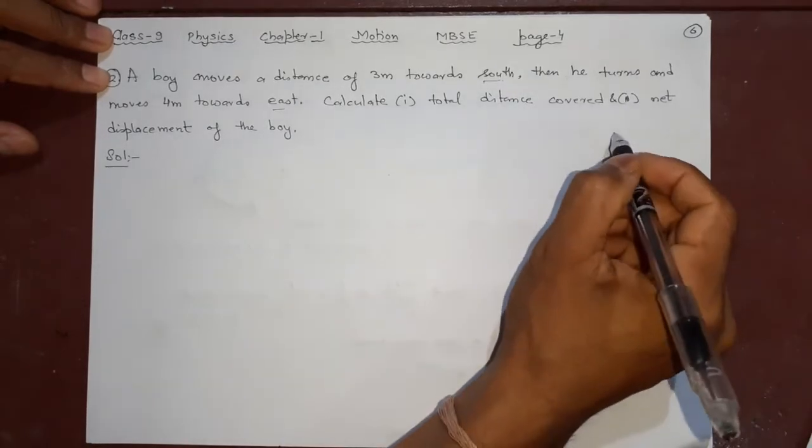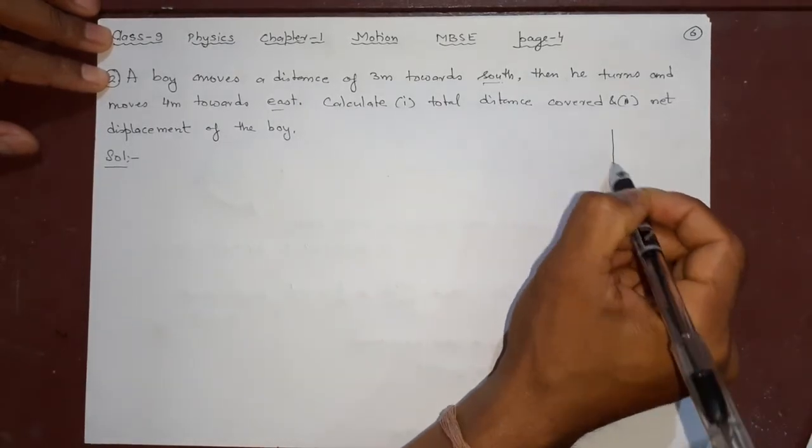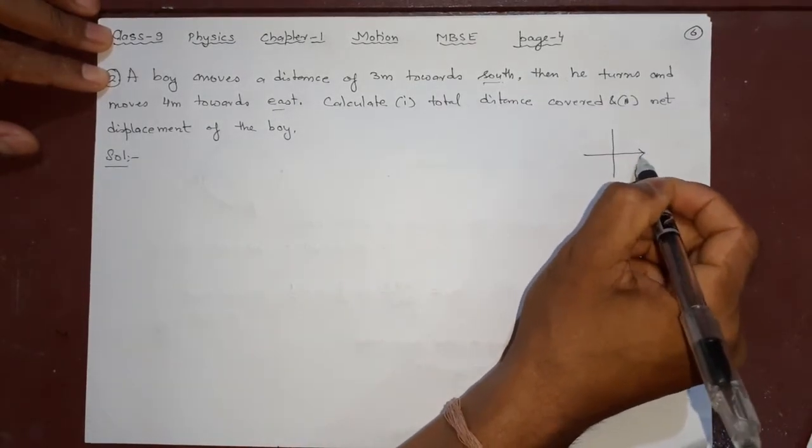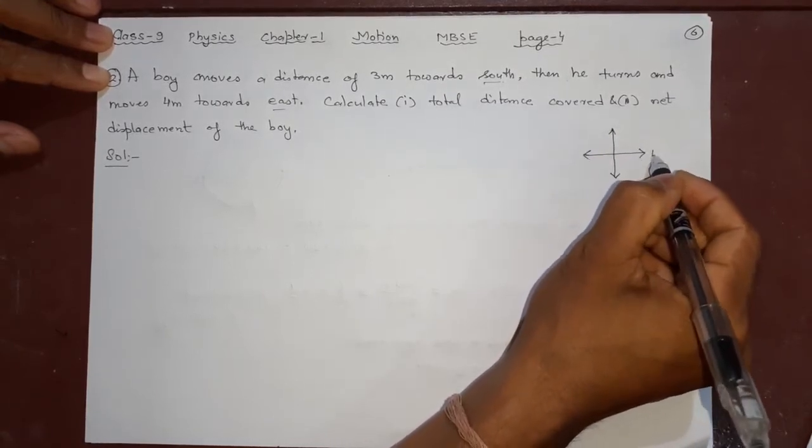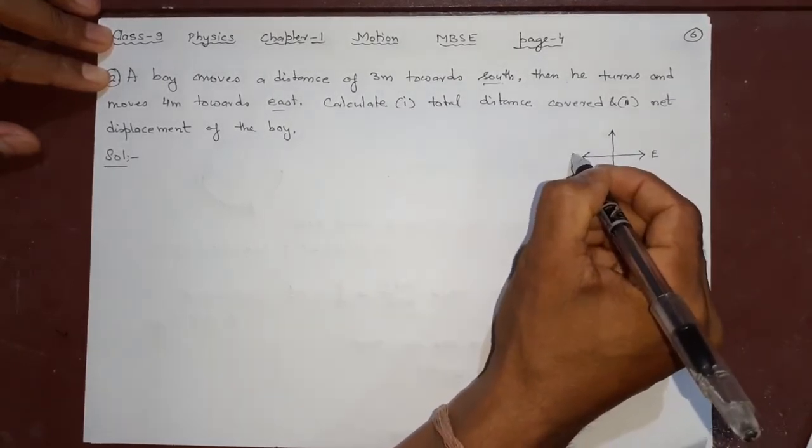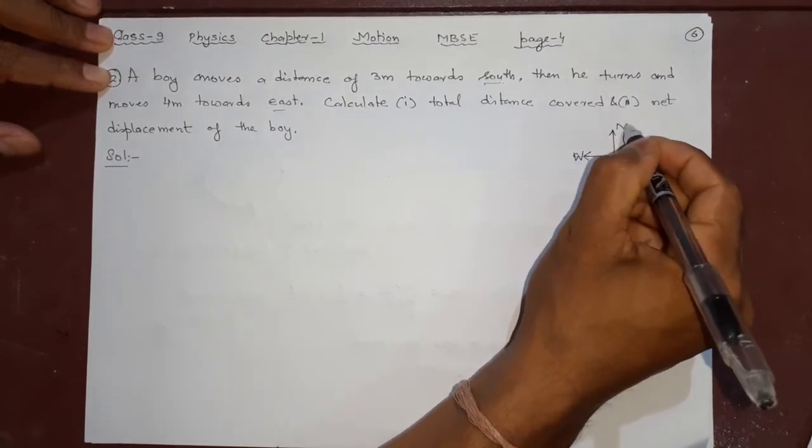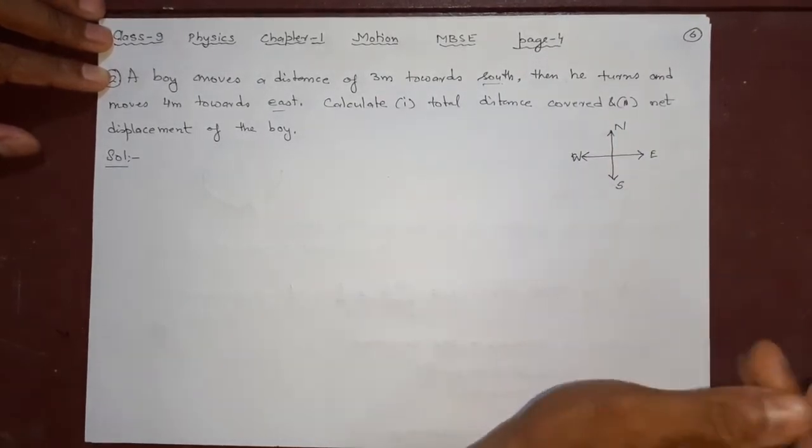So first of all, one very simple rule you have to know is that there are 4 different directions. We call this side as east, this is west, north, south.